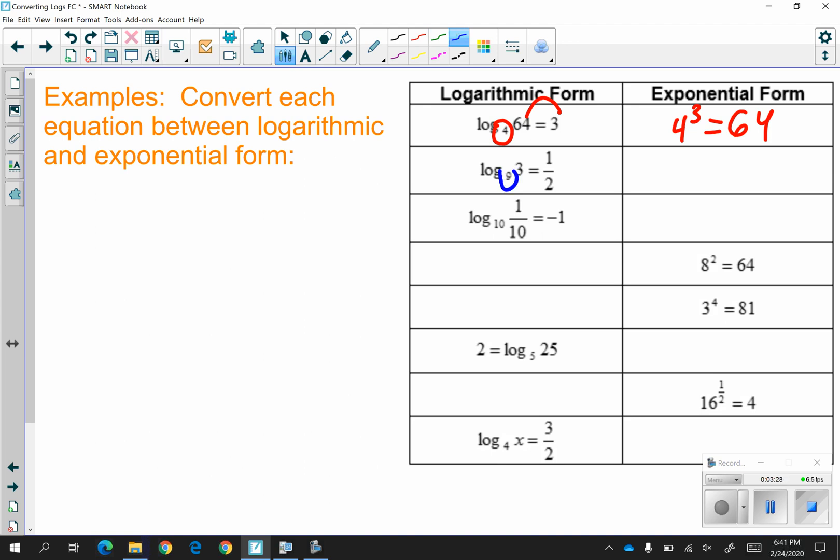For the second one, your base is 9 down below. And you switch the other two values. The 1 half on the right goes to the left. And the 3 on the left goes to the right. This also makes sense because 1 half is really the square root, right? When it's an exponent. So you have the square root of 9 is 3.